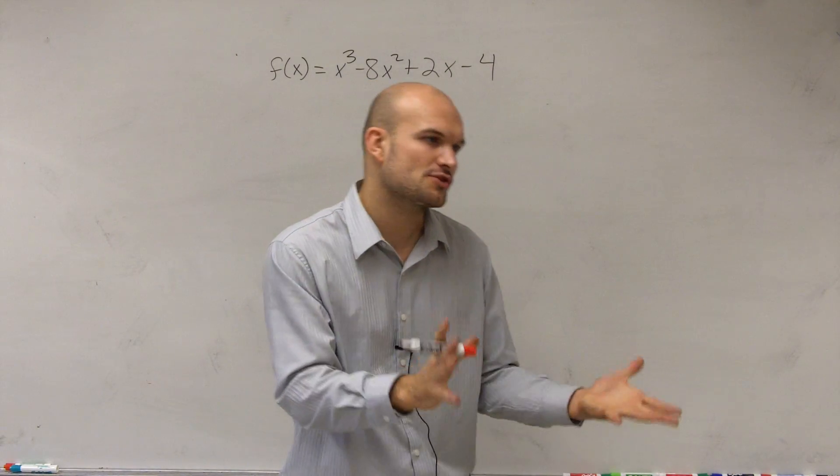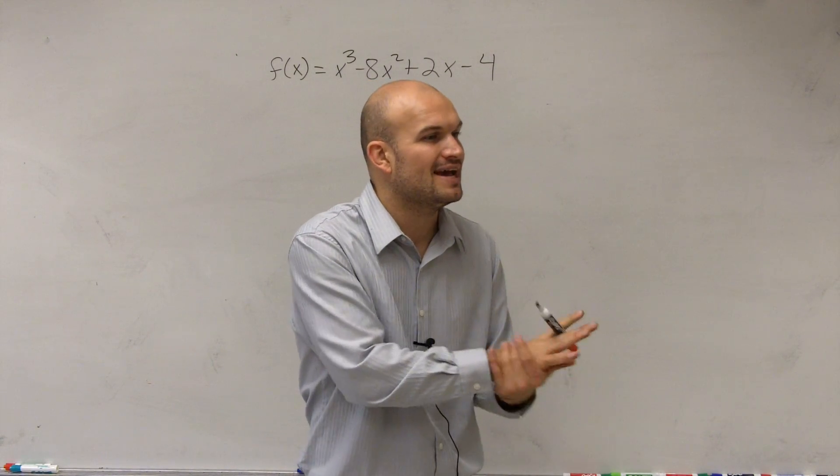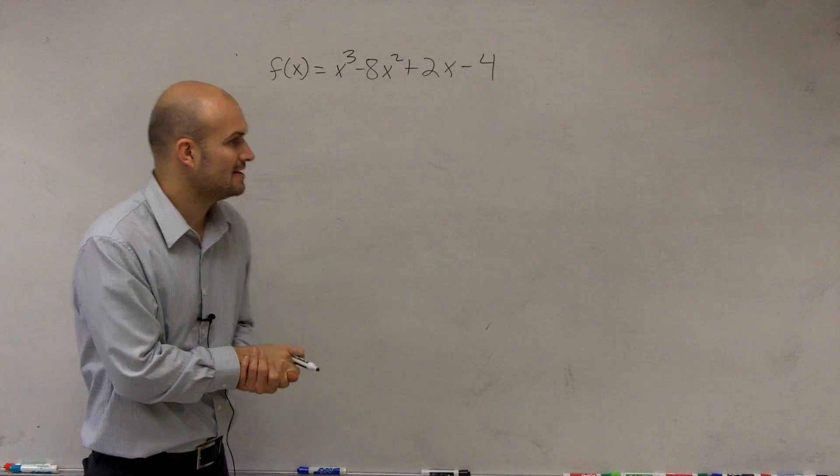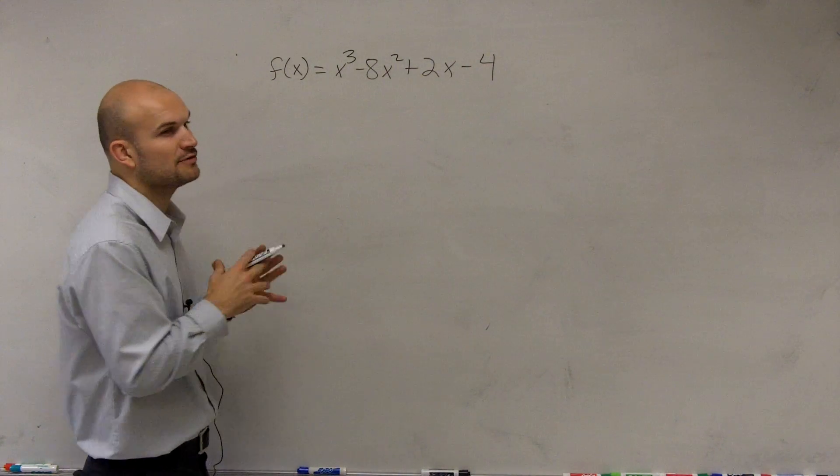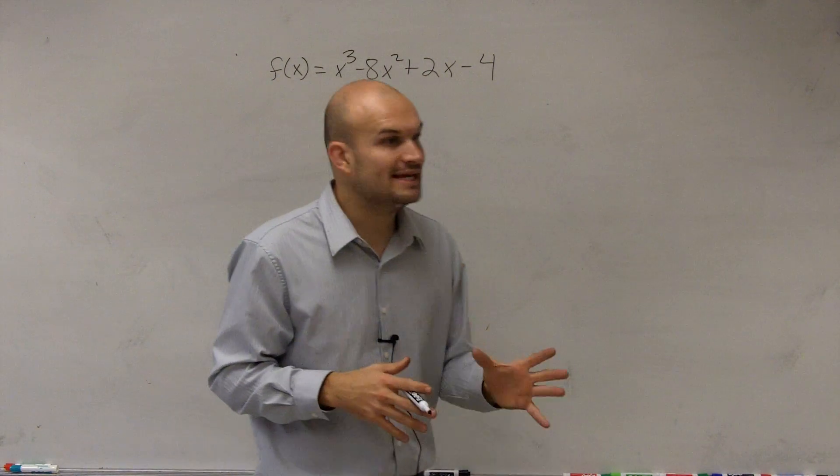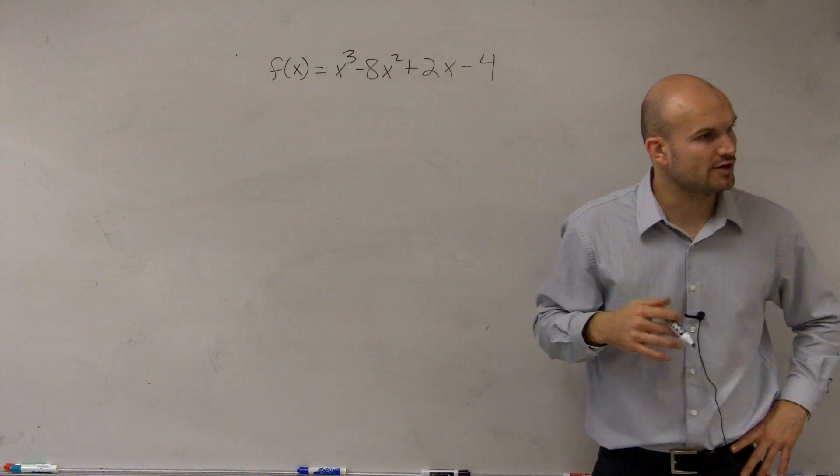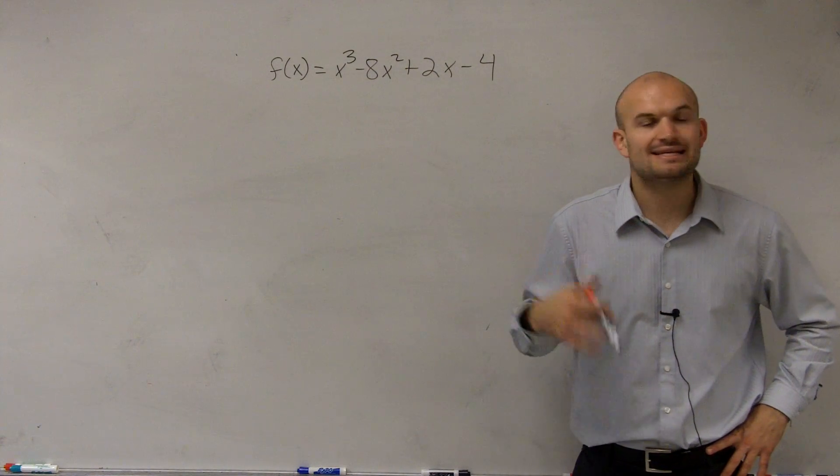So what I'm going to do is I'm just going to use Descartes' rule of signs. We're just going to look at the positive and the negative zeros. So remember what Descartes' rule of signs tells us is the number of positive real zeros is going to be equal to the number of sign changes for your polynomial minus an even number.